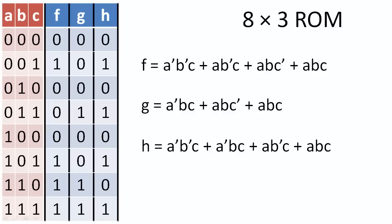A ROM essentially implements the canonical expression of every output variable. In order to implement these canonical expressions, we need to generate all possible minterms with a set of AND gates, and then combine these minterms to create our outputs with OR gates.